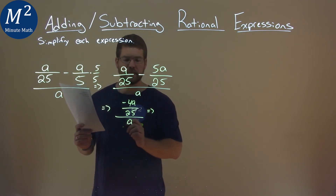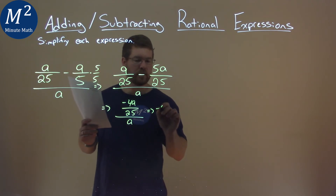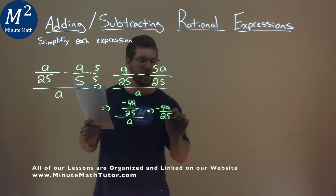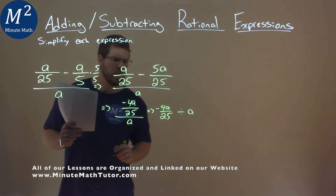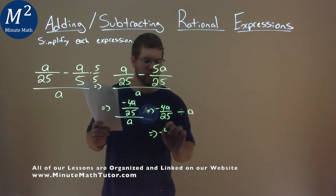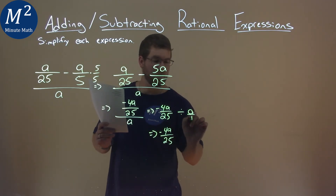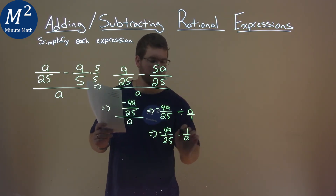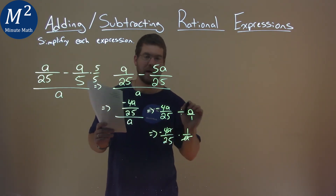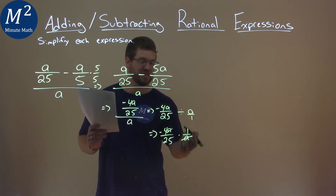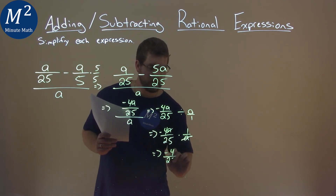To make it easier to see, I'm going to rewrite this. Negative 4a over 25, instead of the bar for division, I'll write it as divided by a. So we have negative 4a over 25, and instead of dividing by a — really a over 1 — we multiply it by 1 over a. We can flip that fraction. What that does is it allows us to cancel the a's out. There's just a 1 left on the right-hand side.